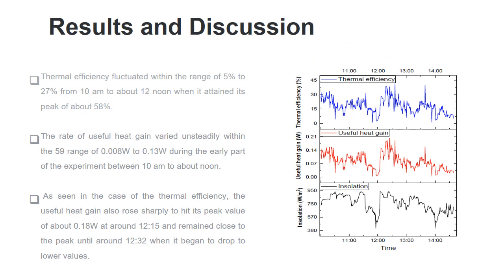This result is for scenario one. The thermal efficiency was seen to fluctuate within the range of 5% to 27% from 10 a.m. to about 12 noon, and when it attained its peak at around 58%, as we can see here.